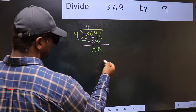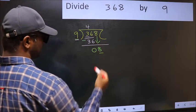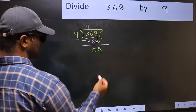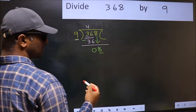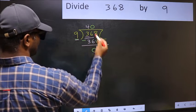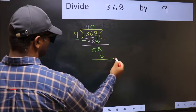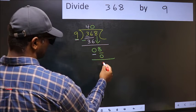Which number should we take here? If I take 1, we will get 9. But 9 is larger than 8. So, what we should do is, we should take 0. So, 9 into 0, 0. Now, we should subtract. 8 minus 0, 8.